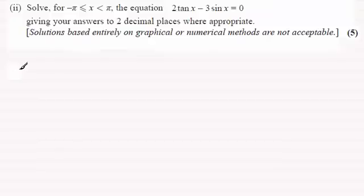OK, welcome back then if you had a go. So we've got to solve the equation 2 tan x minus 3 sin x equals 0, where x is measured in radians and it's greater than or equal to minus π but less than π.